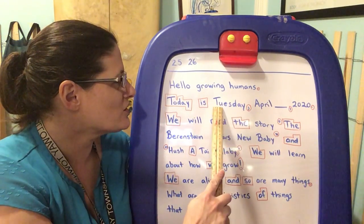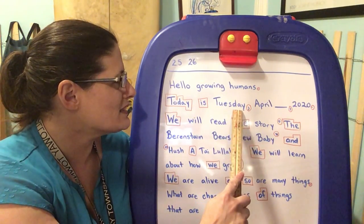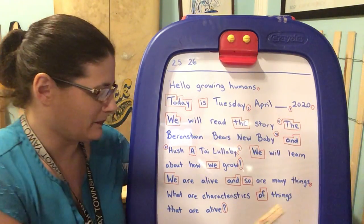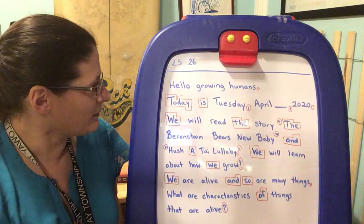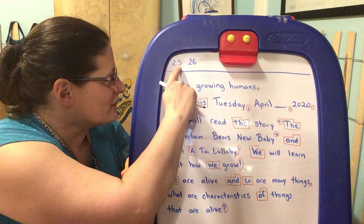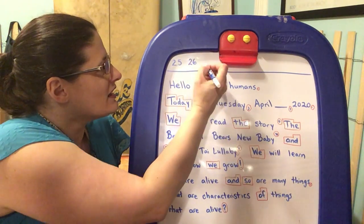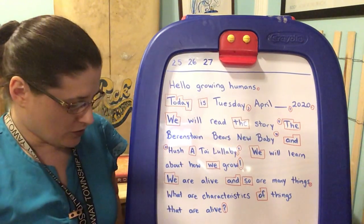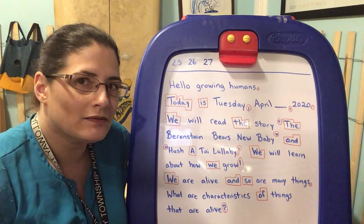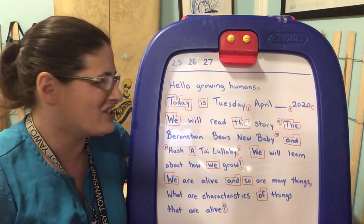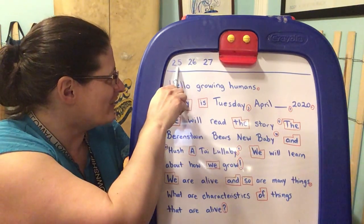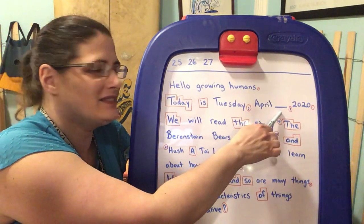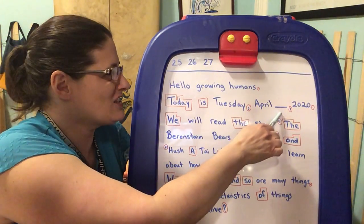Today is Tuesday, April blank, 2020. Let's look up at our number line. We have 25, 26, and yesterday was 27. So what does that make today? Let's check. 25, 26, 27... That's right, 28.